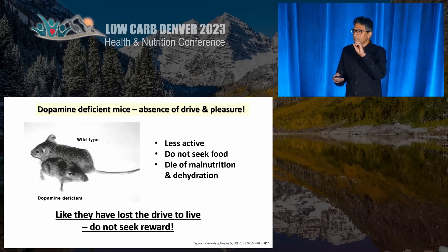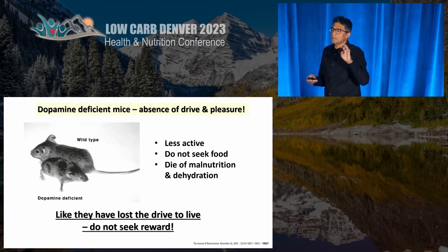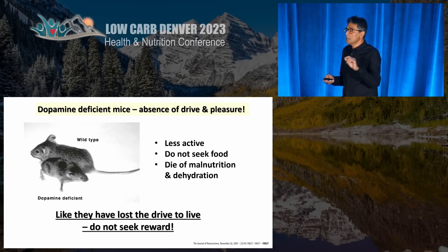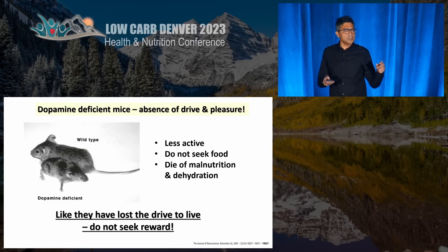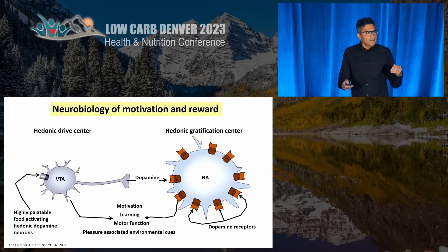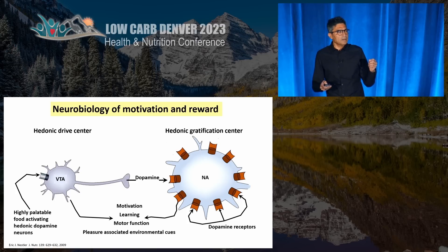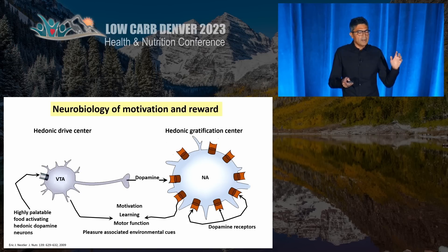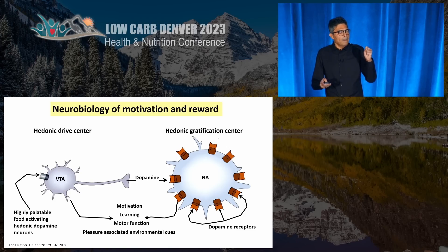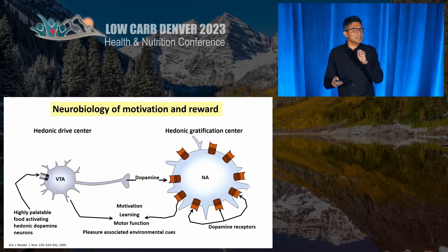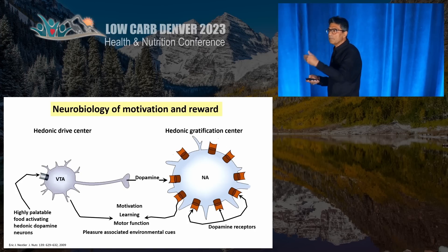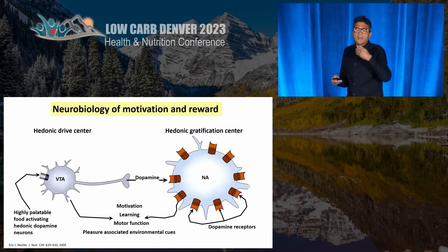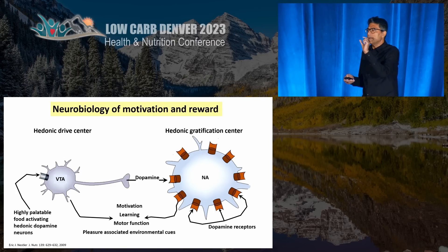Don't get me wrong — the hedonic drive is based on dopamine, and dopamine is important. In dopamine-depleted mice, they just sit in one place, do not seek out food, and die of malnutrition and dehydration — almost like they've lost the desire to live. Getting into the neurobiology: there is a hedonic drive center of dopamine neurons that innervate the hedonic gratification system through dopamine receptors, causing gratification. It's also providing motivation to get food, memory, motor movement, and pleasure-associated environmental cues.